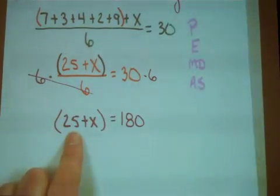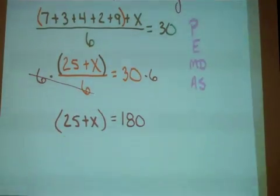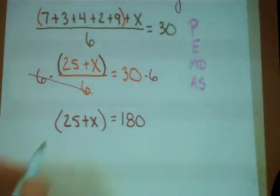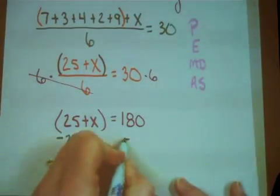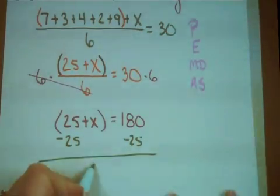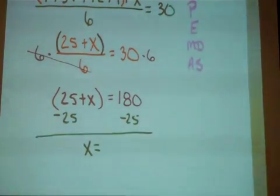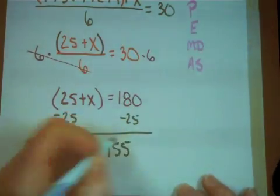That's right. I need to take that positive number and subtract it. So x will equal whatever 180 minus 25 is, and that's 155.